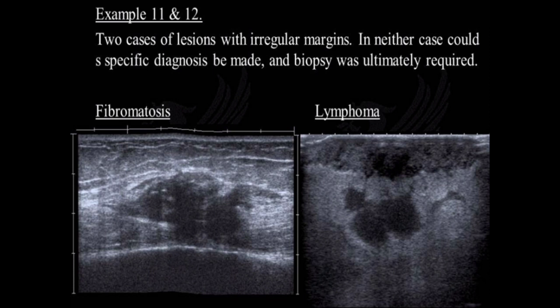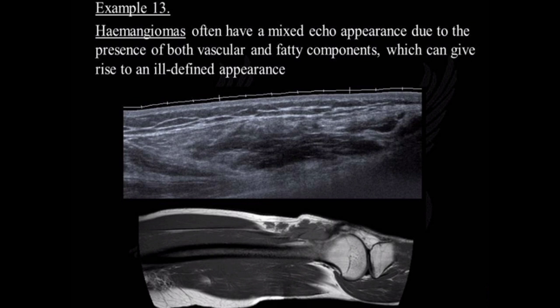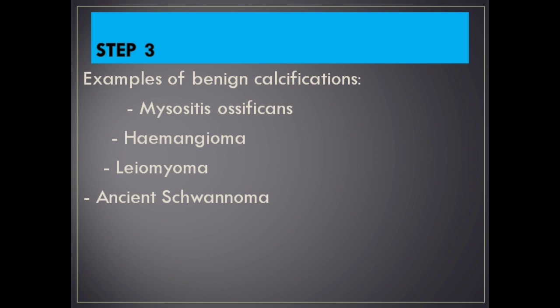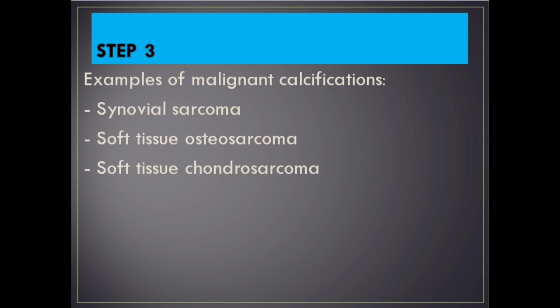Examples 11 and 12: Two cases of lesions with irregular margins — in neither case could a specific diagnosis be made, and biopsy was ultimately required. Example 13: Hemangiomas often have a mixed echo appearance due to the presence of both vascular and fatty components, which can give rise to an ill-defined appearance. Calcifications: Both benign and malignant lesions may contain calcification or ossification. Calcification may more easily be appreciated on ultrasound than MRI. Correlative radiographs or CT may demonstrate a characteristic pattern. Examples of benign calcifications include myositis ossificans, hemangioma, leiomyoma, and ancient schwannoma. Examples of malignant calcifications include synovial sarcoma, soft tissue osteosarcoma, and soft tissue chondrosarcoma.